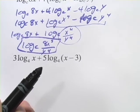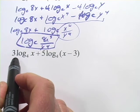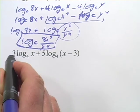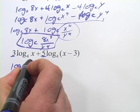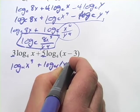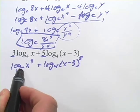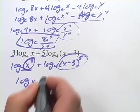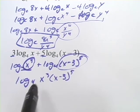Let's try another one — the same thing, writing this as a single expression. We've got 3 times the log base 4 of x plus 5 times the log base 4 of x to the minus third. I'm going to take these coefficients and turn them into exponents first, so that becomes log base 4 of x to the third and log base 4 of x minus 3 to the fifth. Then with addition, we simply multiply, giving us log base 4 of x to the third times x minus 3 to the fifth.